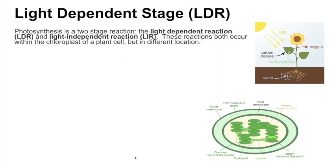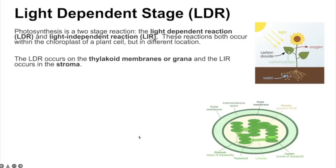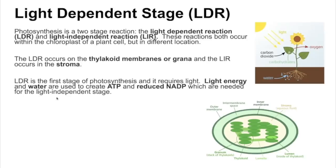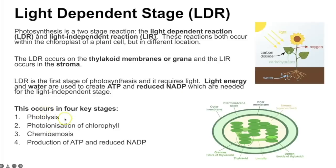Photosynthesis is a two-stage reaction: the light dependent and the light independent reactions. The light dependent reactions happen first and require light, occurring on the thylakoid membrane or granum. Light energy and water are used to create ATP and reduced NADP, which are required for the light independent stage. There are four key steps: photolysis, photoionization of chlorophyll, chemiosmosis, and production of ATP and reduced NADP.